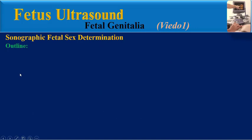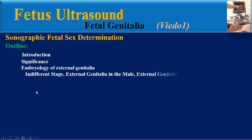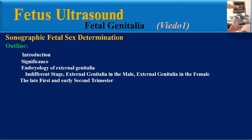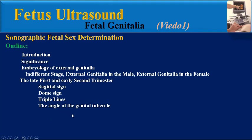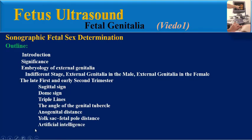The outline of this presentation includes: introduction, the significance of fetal sex determination, embryology of external genitalia including different stages, external genitalia in male and female, sonographic fetal sex determination during the late first and early second trimester, and important signs including the sagittal sign, dom sign, triple lines, angle of genital tubercle, anogenital distance, yolk sac fetal pole distance, the use of artificial intelligence in fetal sex determination, and final teaching points.